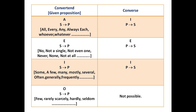If we have an E proposition — where words like no, not a single, not even one, never, none, not at all are used — and the given proposition is 'no S is P', then the converse of E will remain E, with only the subject and predicate interchanged. So the converse will be 'no P is S'.